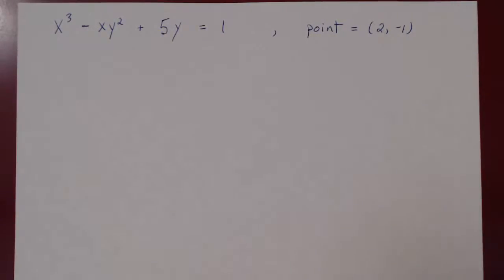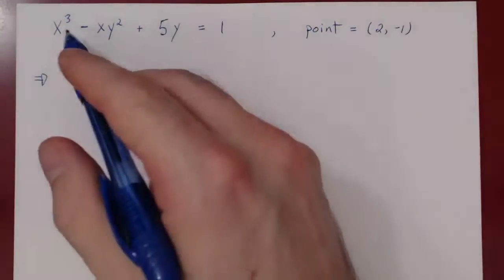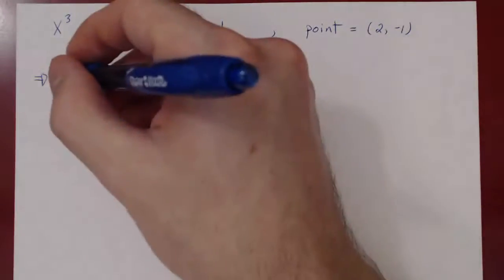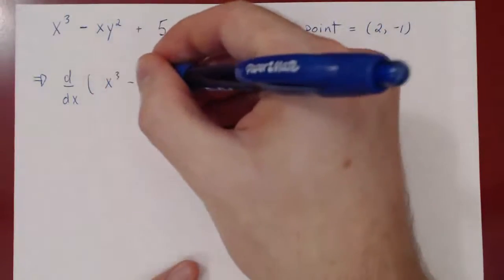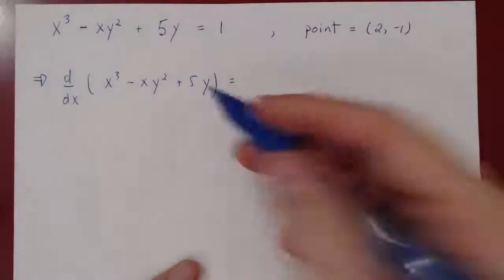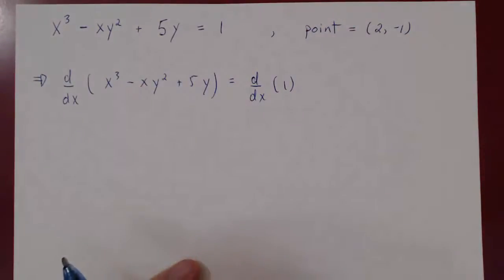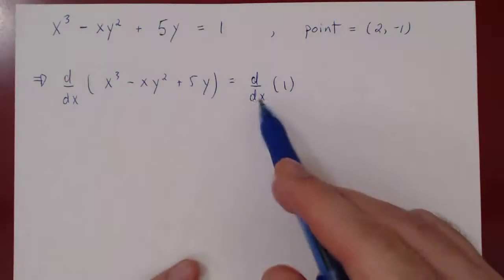We need a derivative, so let's use implicit differentiation. We do not have to solve for y in terms of x. We think of x as the independent variable and y as a function of x. Both sides are equal, so they must have the same derivative with respect to x. The derivative of the left-hand side — x cubed, minus x times y squared, plus 5y — should equal the derivative of the right-hand side.